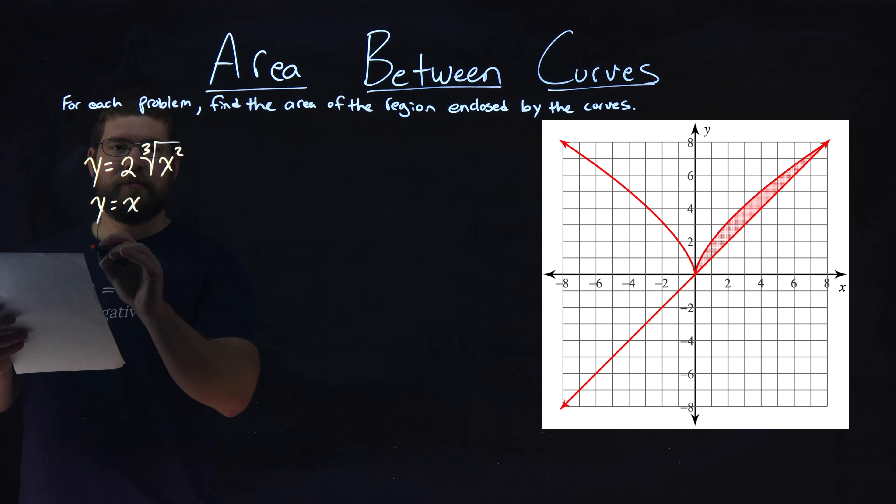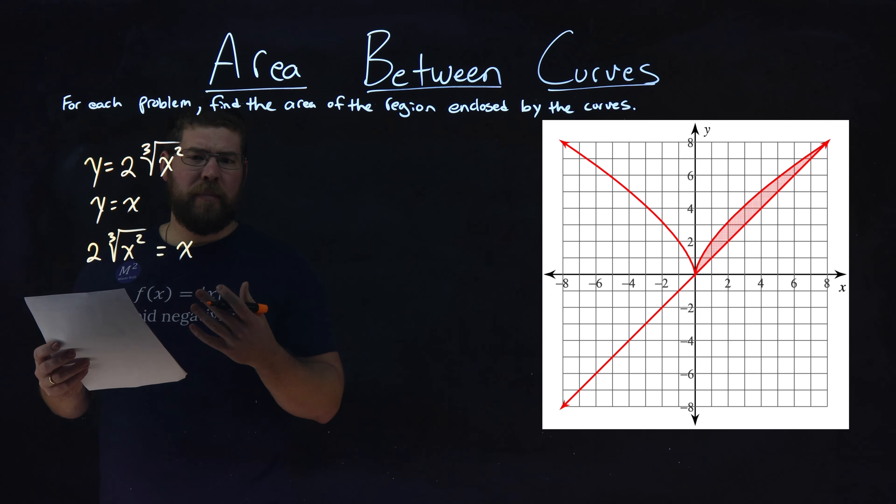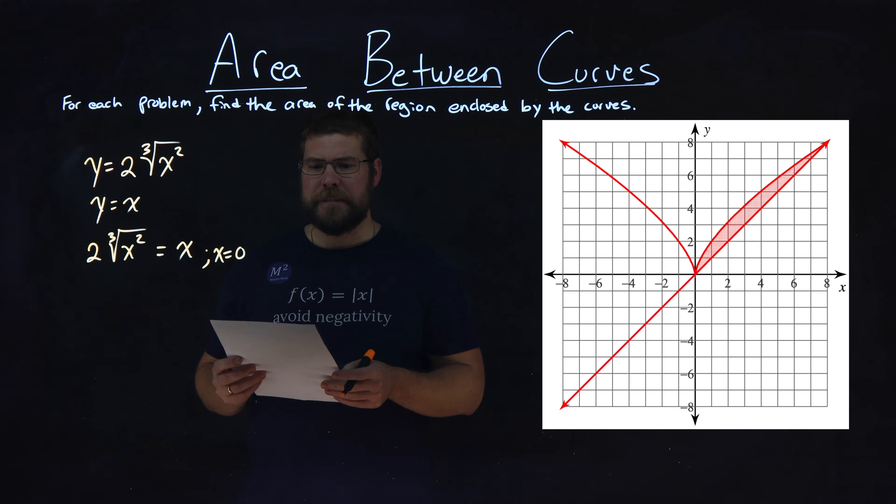So I take 2, third root of x squared, and set it equal to x. When does this happen? Well, right off the bat, we can see this happens at x equals 0. Zero for both, they become equal, easy to see.